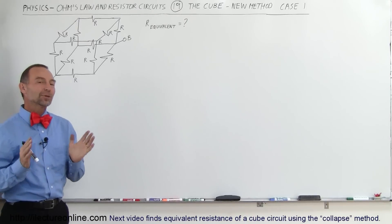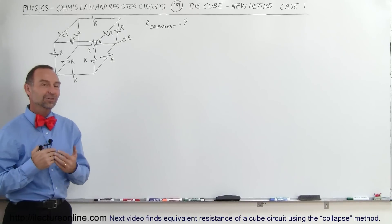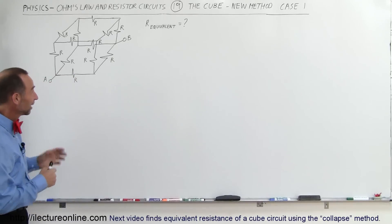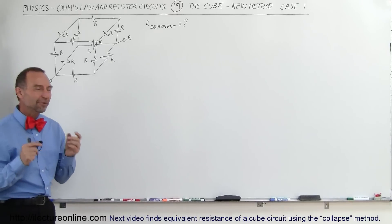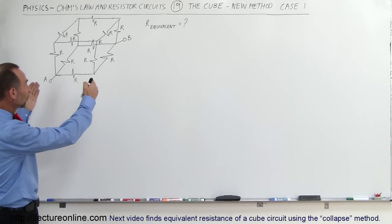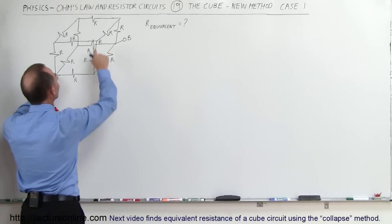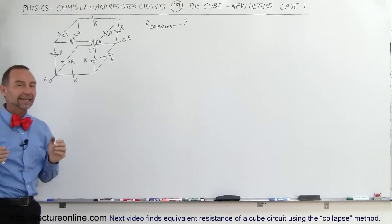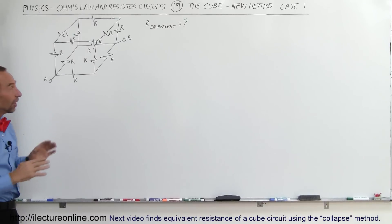Welcome to Electron Line. We're going to take a look at some interesting and complicated resistor circuits, especially the cube circuit, and we're going to look at it in various ways. We're going to find the equivalent resistance of a cube circuit by putting the ends in various locations relative to one another, and in each case we're going to find what we call the equivalent resistance.